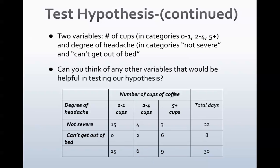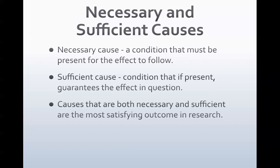I have two types of variables: the number of cups of coffee, categorized as 0-1, 2-4, or 5 or more; and my outcome variable, which is degree of headache, in categories of not-severe and can't-get-out-of-bed. Can you think of any other variables that could be helpful in testing this hypothesis? Could there be any other factor impacting my headache? My guess is stress level, a predisposition for headaches, whether you're a smoker or dehydrated—all sorts of things can come into play.